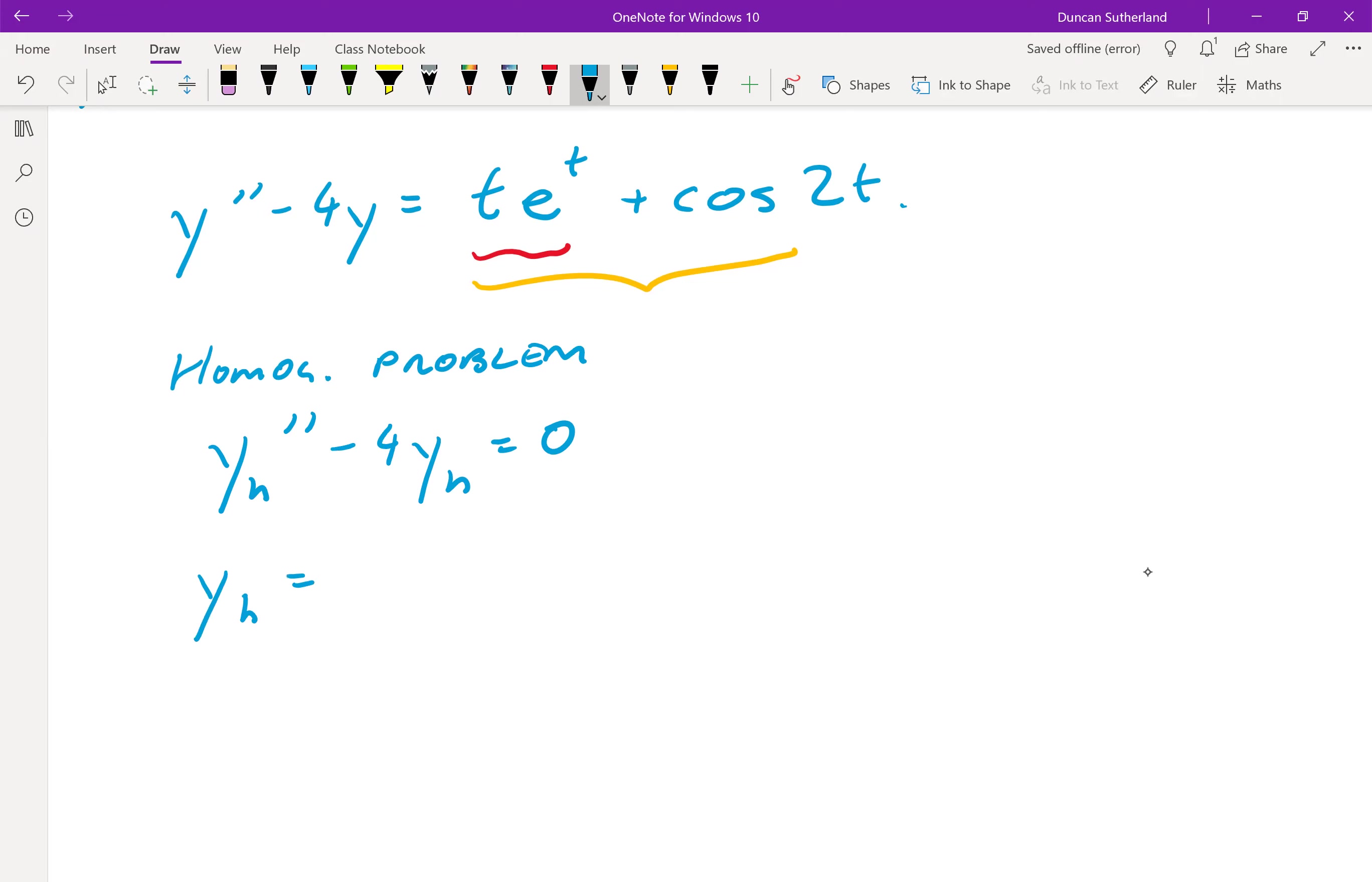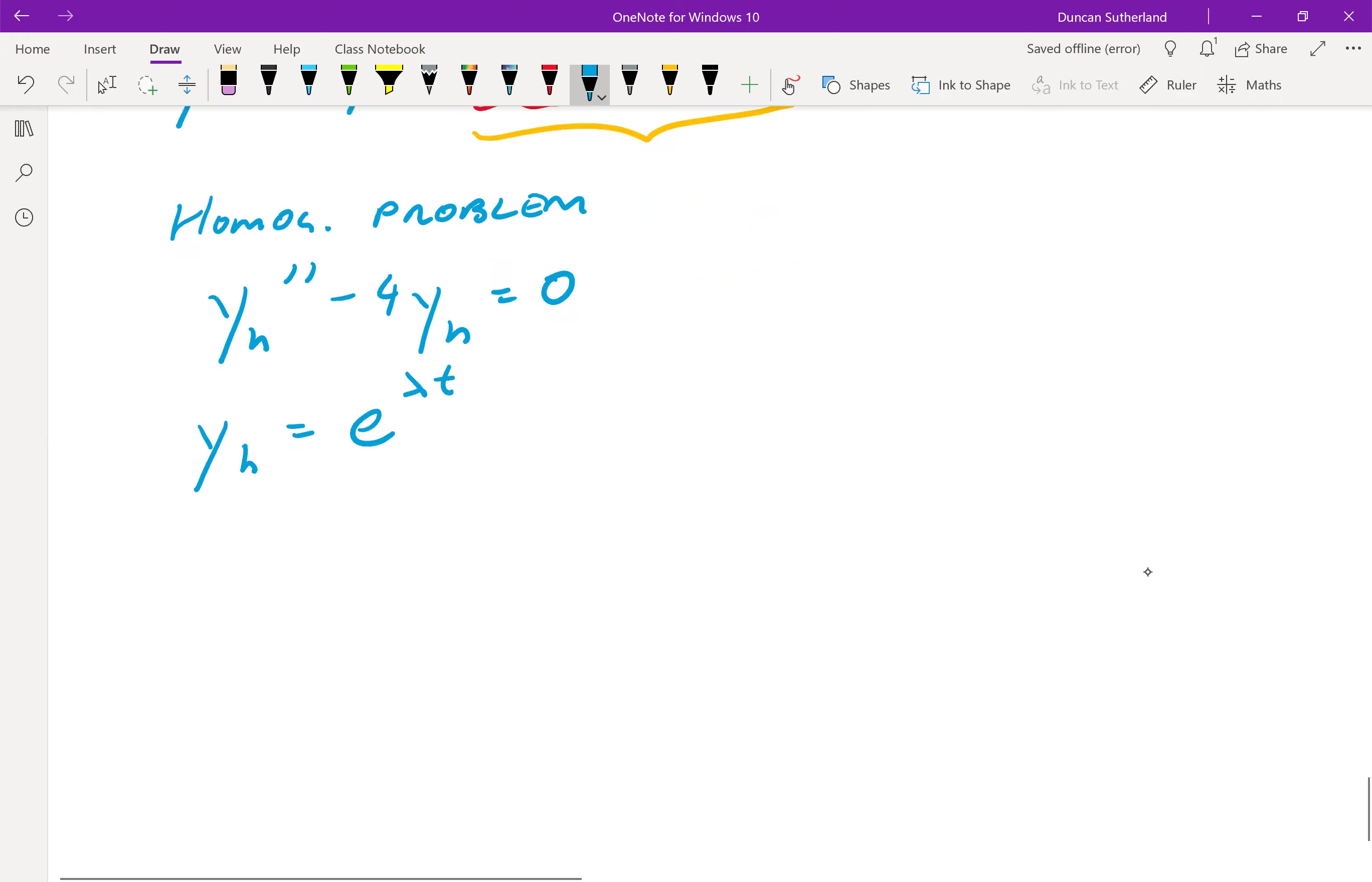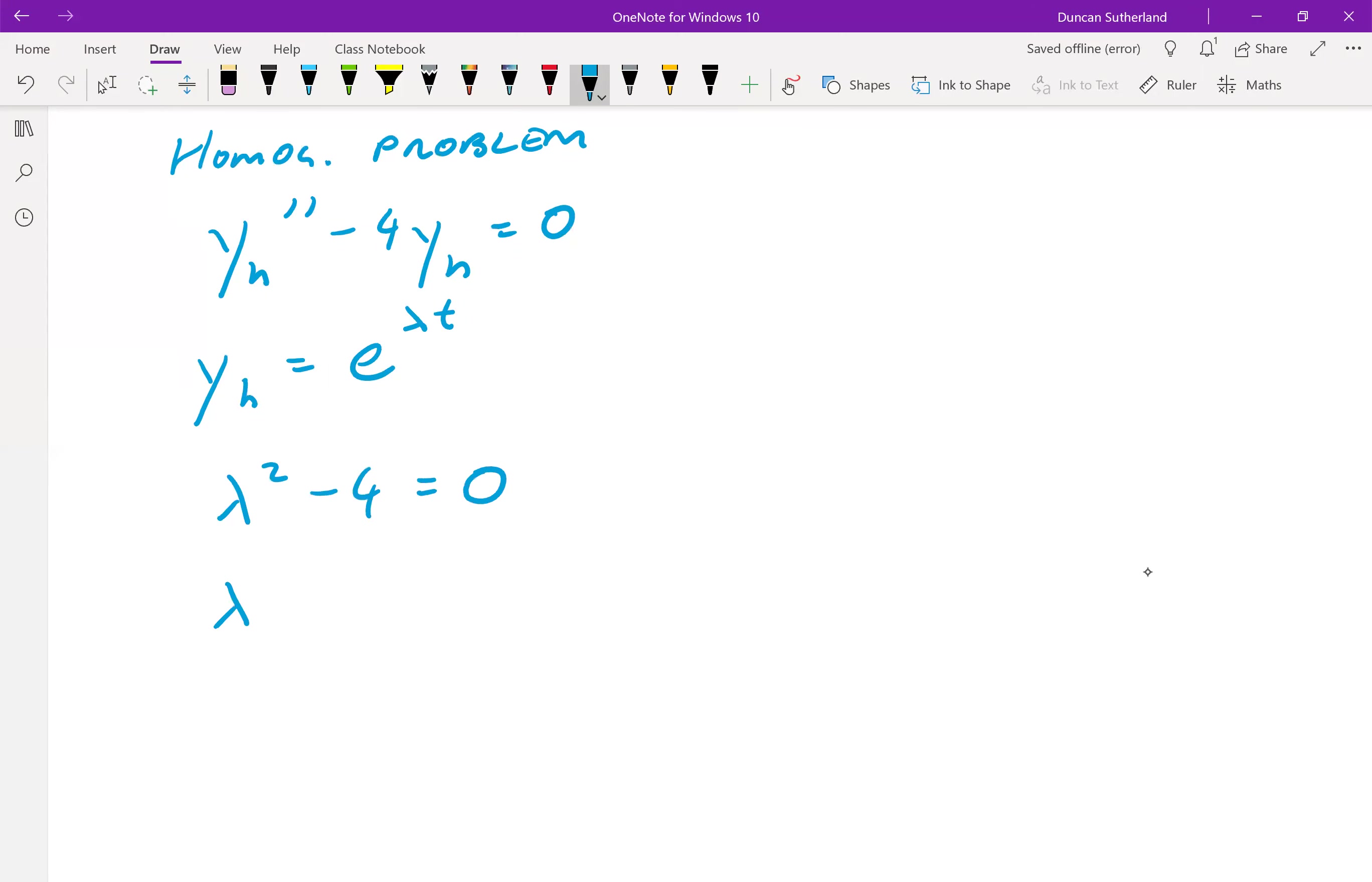We make the guess, or the hypothesis, that y_h equals e to the lambda t. We plug in to obtain the characteristic equation. We find that lambda equals plus or minus 2, so that's two real eigenvalues. So y_h equals a e to the minus 2t plus b e to the 2t.